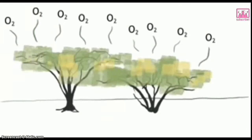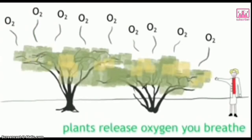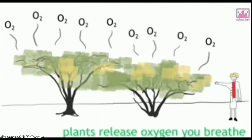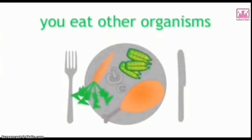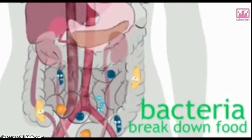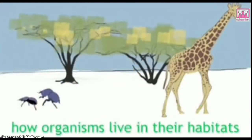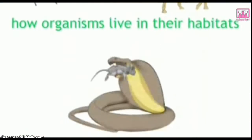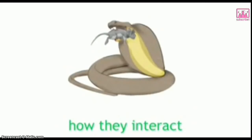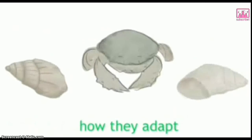You breathe oxygen that's been released into the air by photosynthesizing plants. You eat animals, plants, and even fungi as nourishment for your body. And once that food is in your body, bacteria and sun break it down so your body can use it. In this chapter, we're going to learn all about how organisms live in their habitats, how they interact with other organisms around them, and how they adapt to survive in the environment surrounding them.